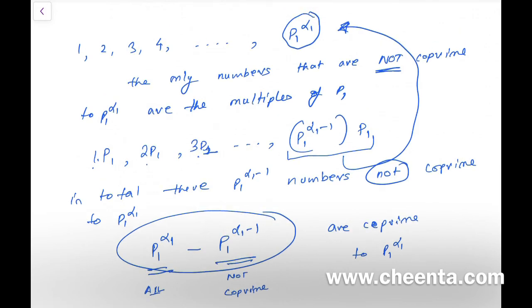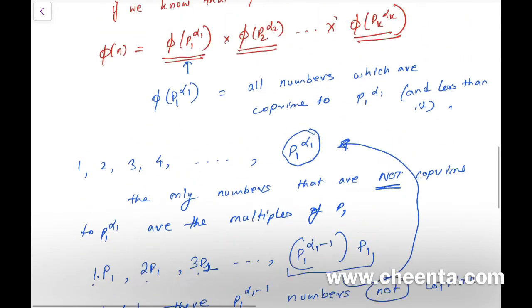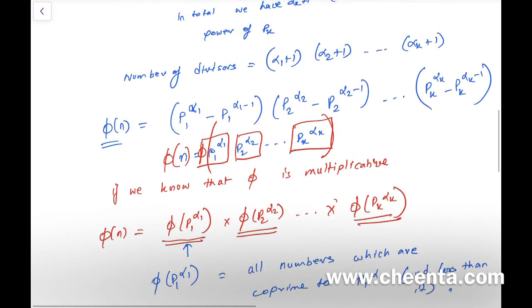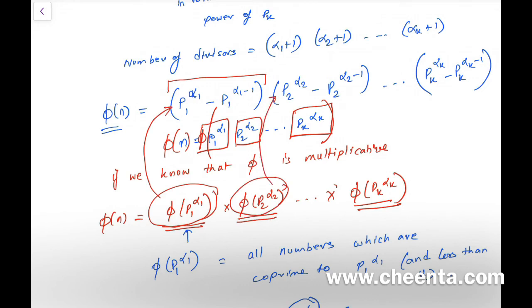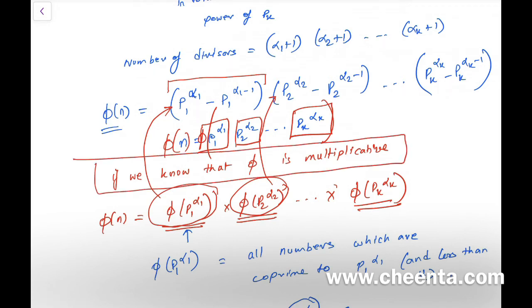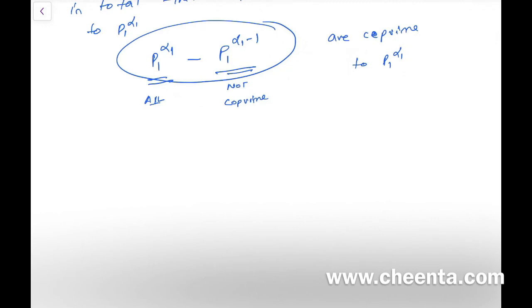This is a standard counting technique: count everything, count what doesn't work, and subtract. That gives each piece of the formula. φ(p₁^α₁) = p₁^α₁ − p₁^(α₁−1), and so on. This works only if you believe φ is multiplicative — proving that requires a bit more work.